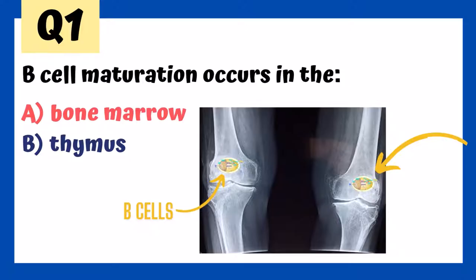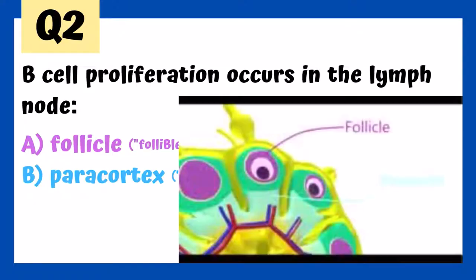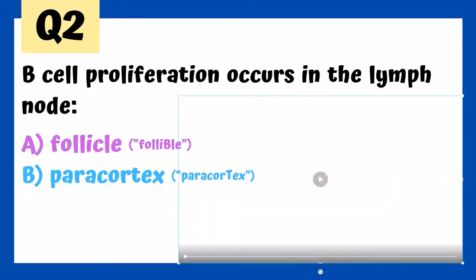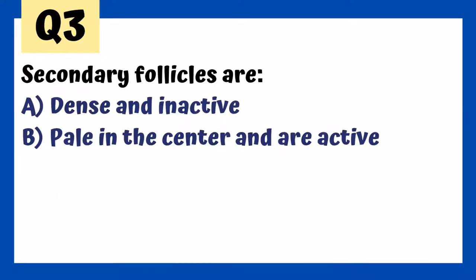B-cell proliferation occurs in the follicle of the lymph node — I call it the 'follible' to remind me of B-cells in the follicle. As opposed to the paracortex, that's where the T-cells are. In the lymph node diagram, in purple we see the follicle and in blue underneath it we see the paracortex. The follicle is where B-cells are; paracortex is where the T-cells are.